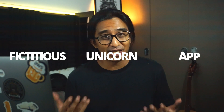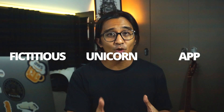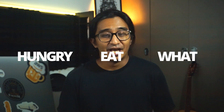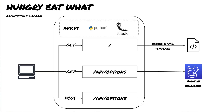Now let's see how we can make it closer to real-life applications and add integration with a database. I'm going to show you a fictitious unicorn app called Hungry Eat What — designed to help people choose what meal to eat for breakfast, dinner, or lunch, by voting on food preferences. The application is built with Python 3 and has one API endpoint: GET /api/options to retrieve all options from the database, and POST /api/options to vote. The architecture uses Amazon DynamoDB, and those APIs will need integration with DynamoDB.